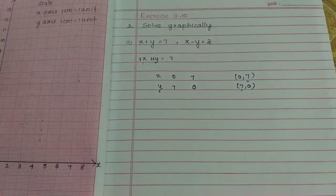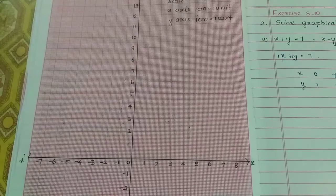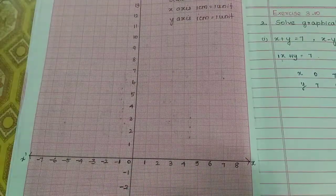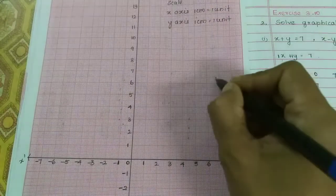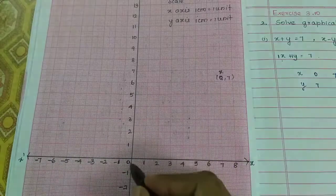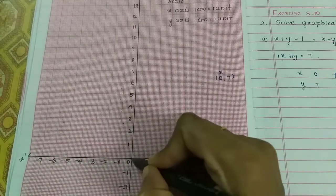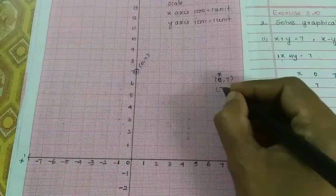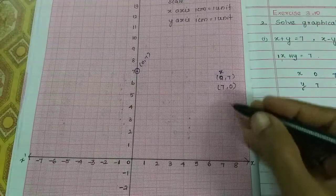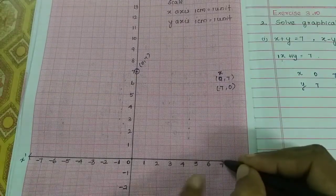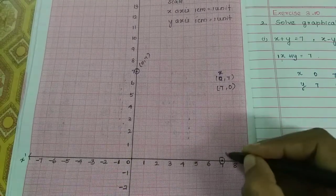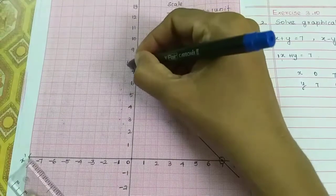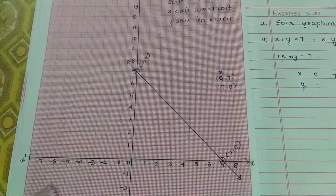First, we plot the point (0, 7). We mark the x-axis and y-axis and mark the numbers. For point (0, 7): x-axis is 0 and y-axis is 7 — here is that point. For point (7, 0): x-axis is 7 and y-axis is 0 — this point is (7, 0). Now we will join the two points to form the line.